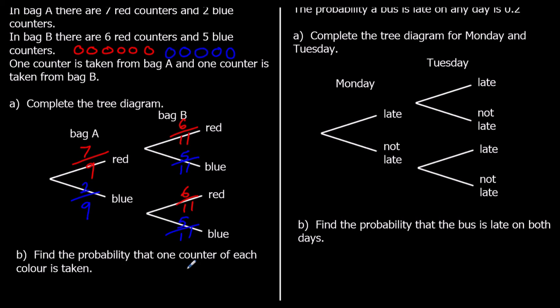Now the question says, find the probability that one counter of each colour is taken. So to find the probabilities now, we times across the branches. So the probability of red then red is 7 ninths times 6 elevenths, so red then red is 42 over 99. Red then blue is 7 ninths times 5 elevenths, so 35 over 99. Blue then red is 2 ninths times 6 elevenths, so 12 over 99. And blue blue, 2 ninths times 5 elevenths, 10 over 99. The question said the probability of one of each colour. So it's either red then blue or blue then red. So 35 out of 99 plus 12 out of 99 is 47 out of 99.